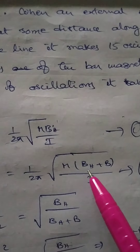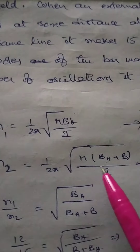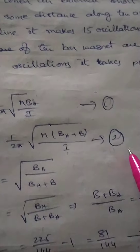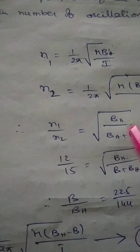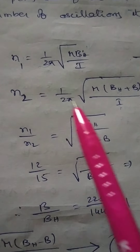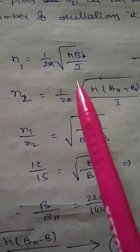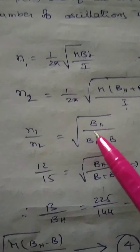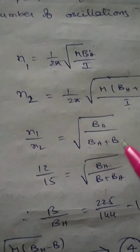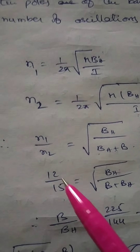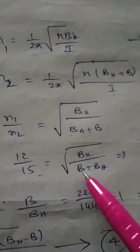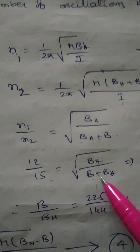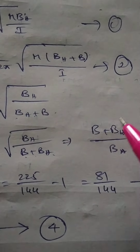In that situation, the net magnetic induction is Bh + B. So n2 = (1/2π)√(M(Bh + B)/I) — equation 2. Dividing equation 1 by equation 2: n1/n2 = √(Bh/(Bh + B)). The 1/2π and M/I terms cancel, giving 12/15 = √(Bh/(Bh + B)).